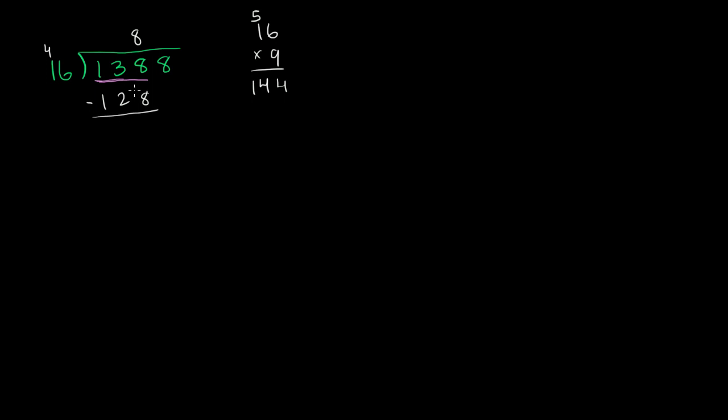When I subtract, I get the remainder from 138. 8 minus 8 is 0, 3 minus 2 is 1, and then these cancel out. So I have a remainder of 10. But I still have this 8 right over here, so I bring that down. So I have 108.